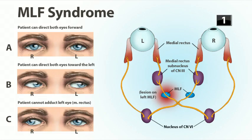This is describing internuclear ophthalmoplegia, so the damaged structure would be the medial longitudinal fasciculus — specifically, the left MLF in this case.